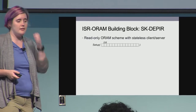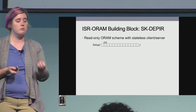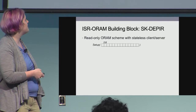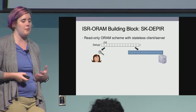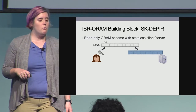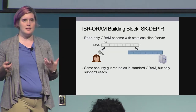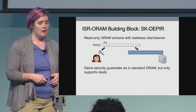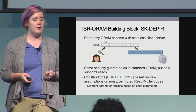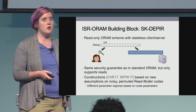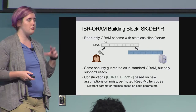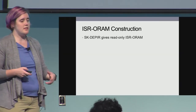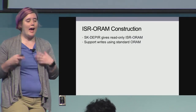Our construction relies primarily on secret key D-PIR. This is essentially a read-only ORAM scheme with a stateless client and server. We have a setup function that takes in a database, outputs some client key and an encoded database which is handed to the server. This gives us the same obliviousness security guarantees as standard ORAM but only supports reads. We have constructions for this by Kennedy et al. and Boyle et al. based on noisy permuted Reed-Muller codes, with different parameters based on the underlying Reed-Muller paradigms. So essentially we have a read-only ISR ORAM, and the question is how do we support writes?